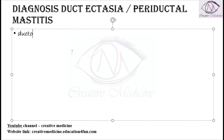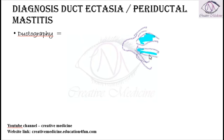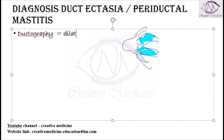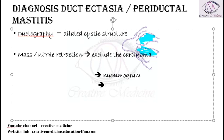For diagnosis, first we do a ductography, where contrast material is passed into the ducts. The ectatic ducts fill with contrast, so on ductography we see dilated cystic structures. If the patient has a mass or nipple retraction, we must exclude carcinoma using a mammogram and histology — histology should be negative in ductal ectasia.